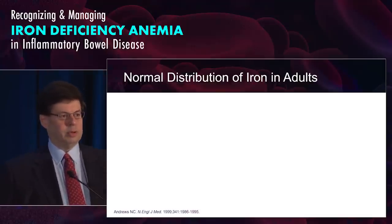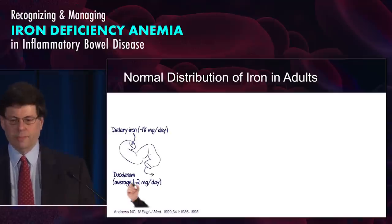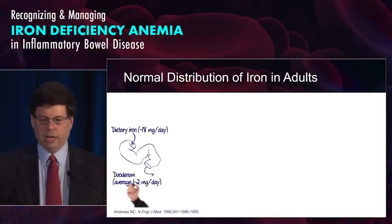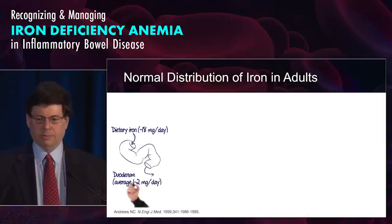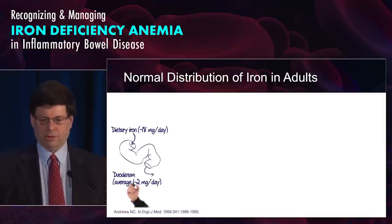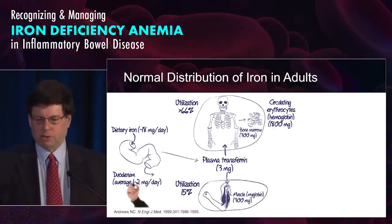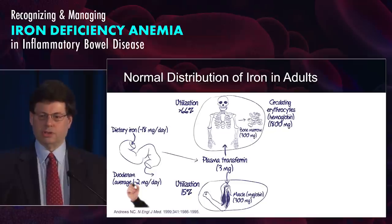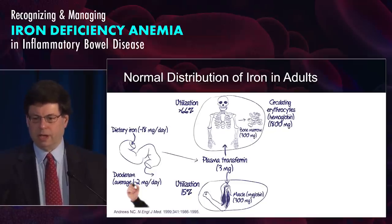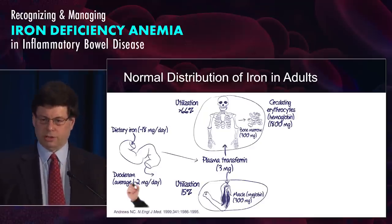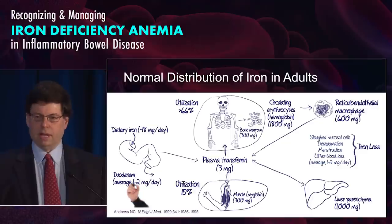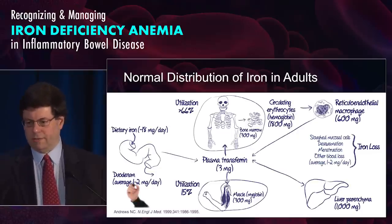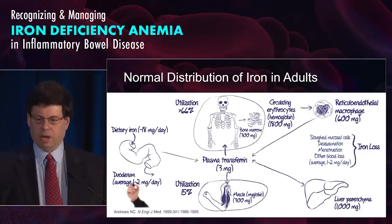To review the basics of iron absorption: one to two milligrams per day is absorbed in the duodenum out of approximately 18 milligrams consumed daily, so it's a relatively small amount. This gets absorbed, goes into the plasma in the form of transferrin, and may go to the muscle or skeletal system — but most goes to the skeletal system. Circulating erythrocytes and hemoglobin come from the skeletal system, then get degraded by the reticuloendothelial system — macrophages — and the liver is involved in production of transferrin.